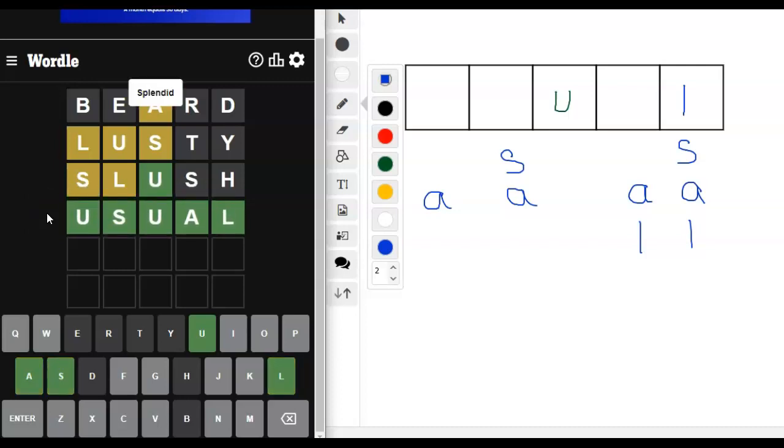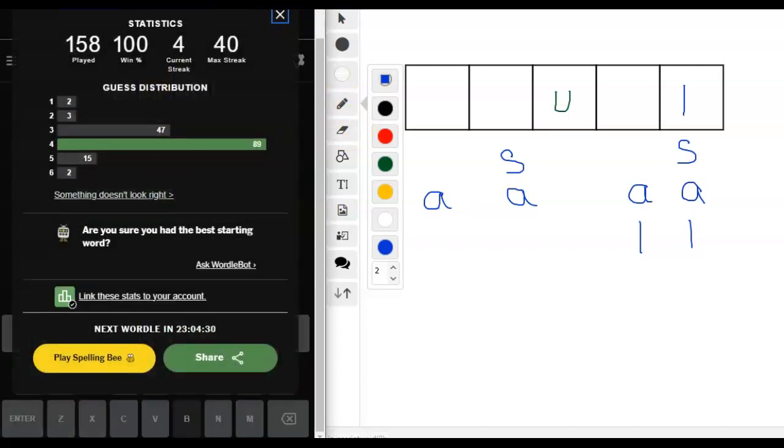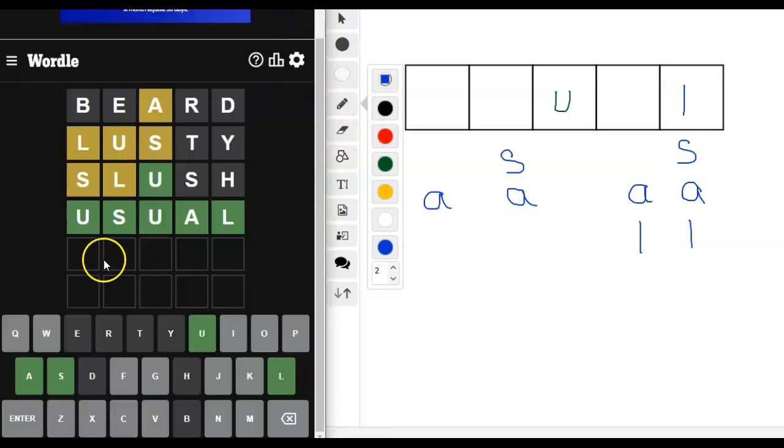All right. It was. Oh, what an unusual one. That was a hard one. Okay. Two U's. Not only a letter used twice, but it's a U used twice. All right.